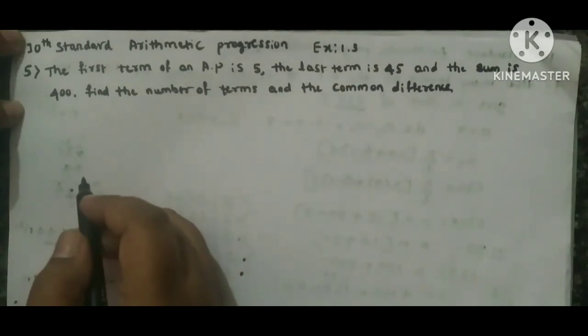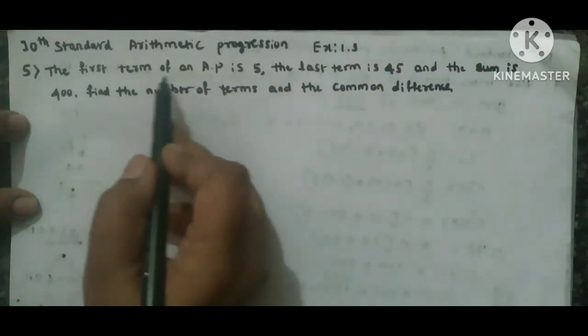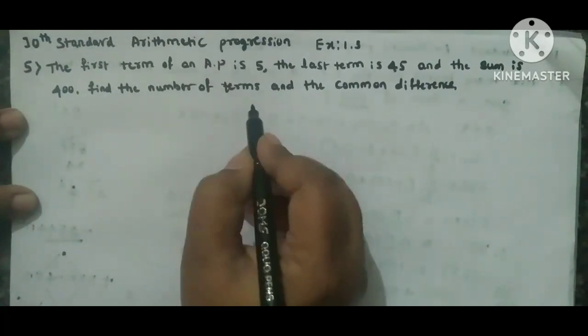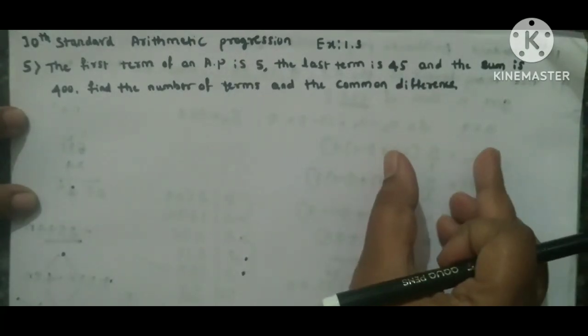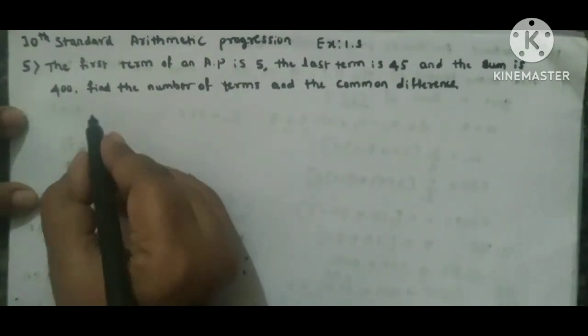The sum. Here what they have given, first we'll see. The first term of an AP is 5, means first term of the AP is 5, which is a. The last term is 45. Always the last term of the AP is represented by l or by an. So a is